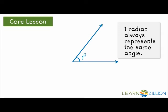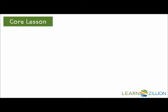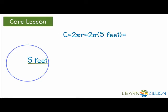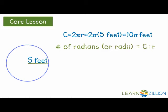One more detail concerning radians. For example, let's say we have a circle whose radius is 5 feet. The circumference will be 2 pi r which equals 2 pi times 5 feet or 10 pi feet. The number of radians or radii in any circle is the circumference divided by the radius.